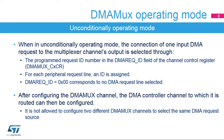When the multiplexer is set, it ensures the actual routing of DMA request acknowledged control signals. The connection of one peripheral request to the multiplexer channel's output is selected through the programmed request ID in the DMA REQ ID field of the channel control register, or DMA MUX CXCR. For each peripheral request line, an ID is assigned. DMA REQ ID equals 0x00 corresponds to no DMA request line selected. After configuring the DMA MUX channel, the DMA controller channel to which it is routed can then be configured. It is not allowed to configure two different DMA MUX channels to select the same DMA request source.